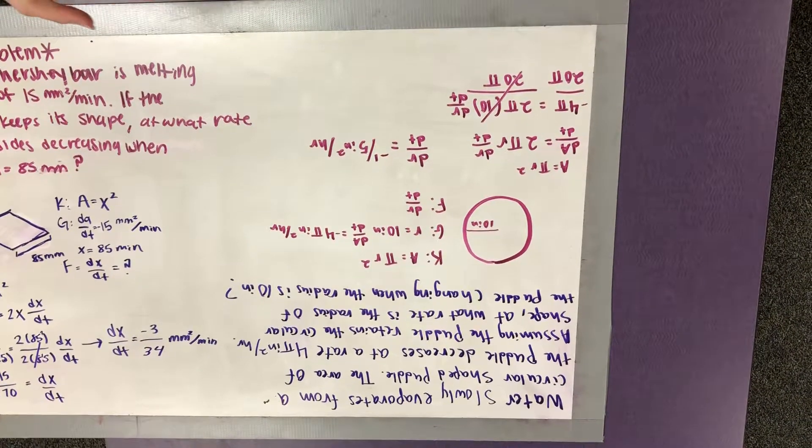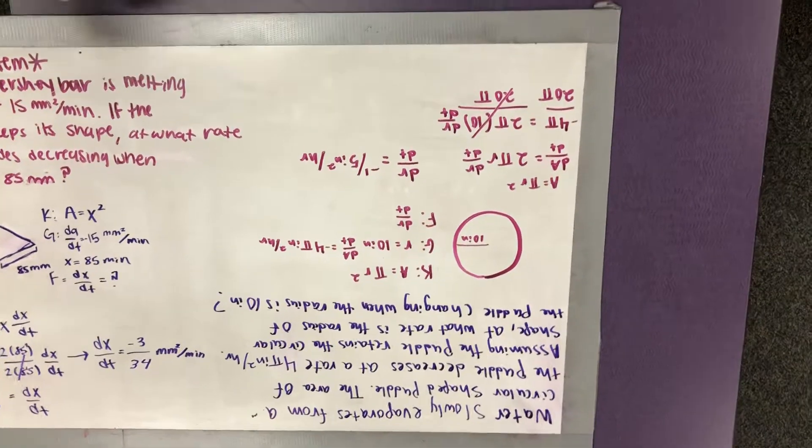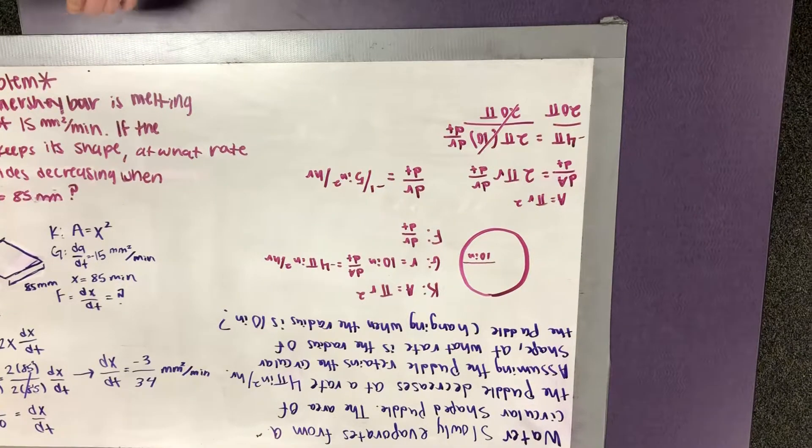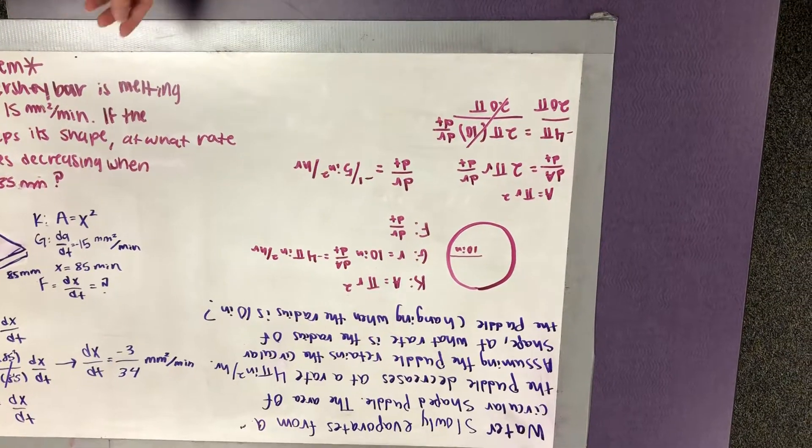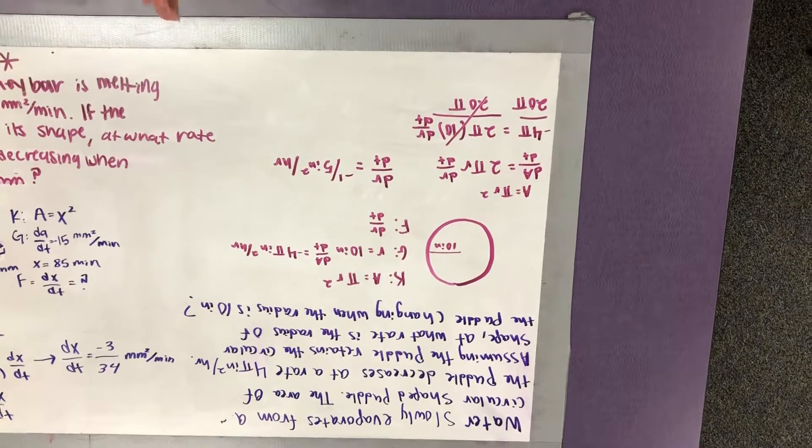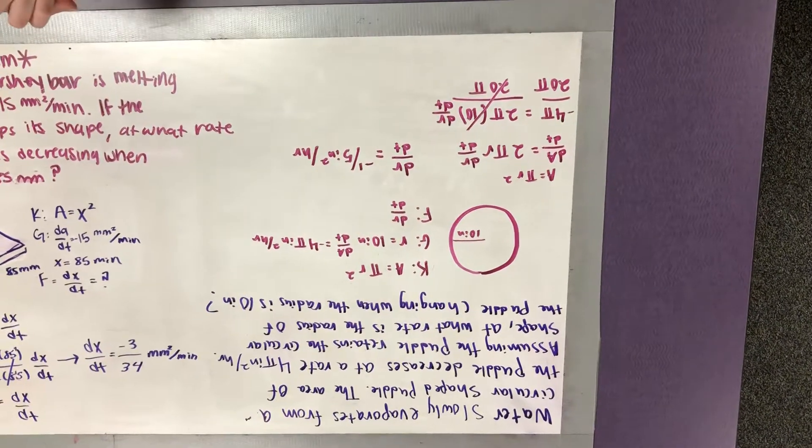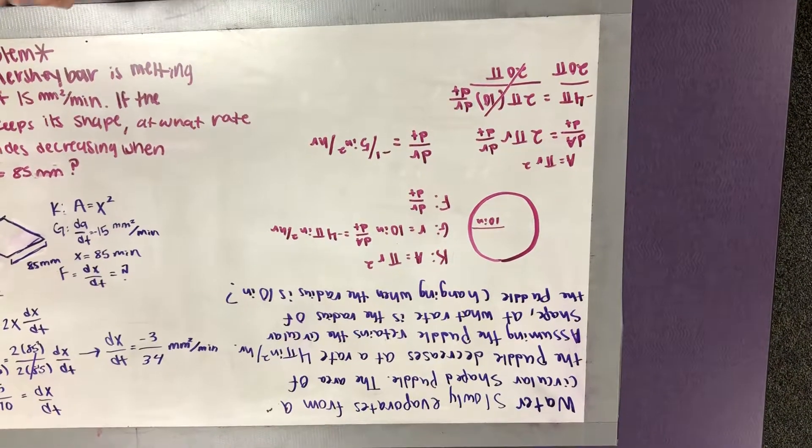So our equation is dA over dt equals 2 pi r dr over dt. So we know our dA over dt is negative 4 pi equals 2 pi times 10 dr over dt. And then we divide by 20 pi, which is just 2 times 10, and divide both sides. And so our answer is negative 1 fifth inches squared per hour.